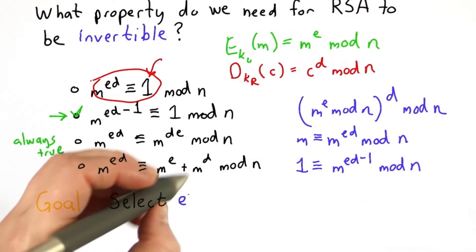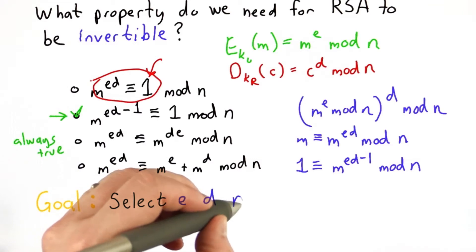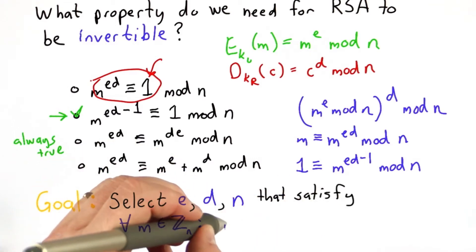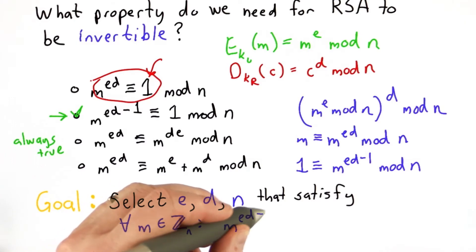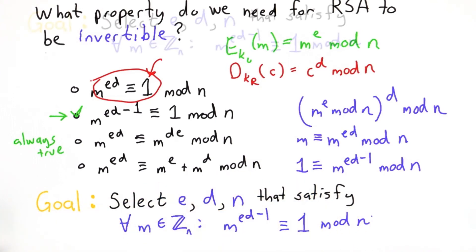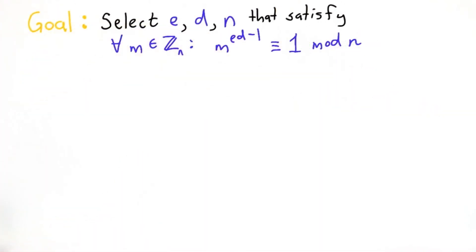So that means our goal is to select values for e, d, and n that satisfy for all m values that m to the ed minus 1 is congruent to 1 mod n. So that's our goal. If we have that, we have the correctness property we need for RSA.